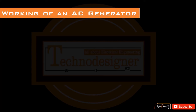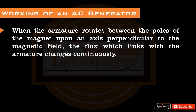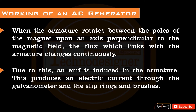Working of an AC generator: When the armature rotates between the poles of the magnet upon an axis perpendicular to the magnetic field, the flux which links with the armature changes continuously. Due to this, an EMF is induced in the armature. This produces an electric current through the galvanometer and the slip rings and brushes.